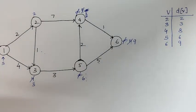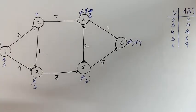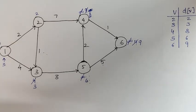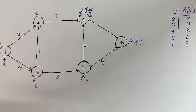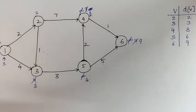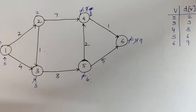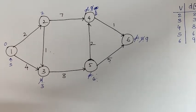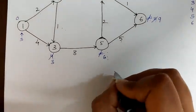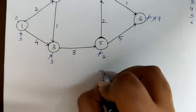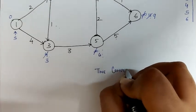Now, this is how Dijkstra algorithm works. We have shown the working of Dijkstra algorithm on a directed graph to find the shortest path. We can also find the time complexity of this graph in its general form. So, time complexity: